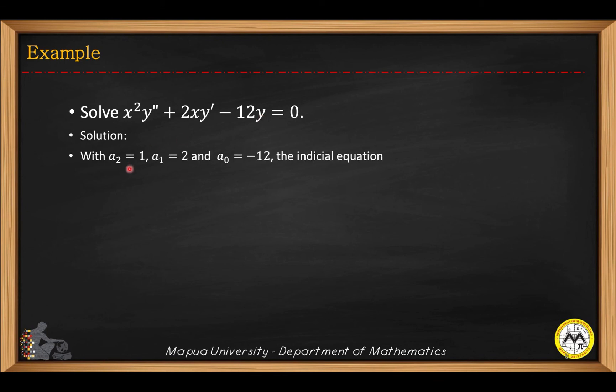From the equation, a2 is 1, a1 is 2, and a sub 0 is negative 12. We substitute in the indicial equation. This becomes a2 is 1 here, a1 is 2, and a sub 0 is negative 12. Simplifying gives you r squared plus r minus 12 equals 0.